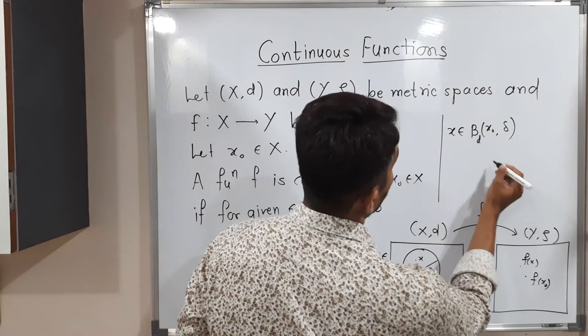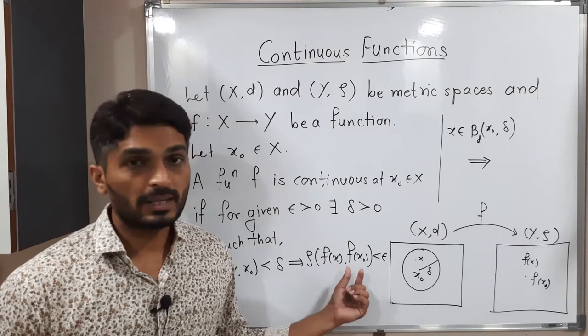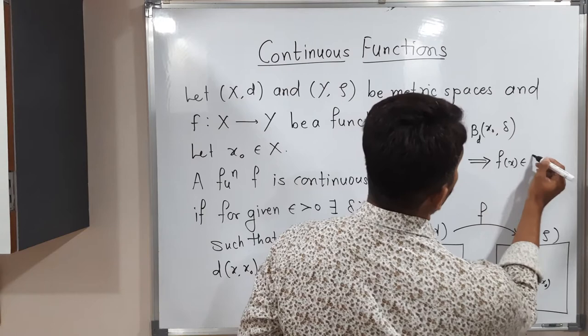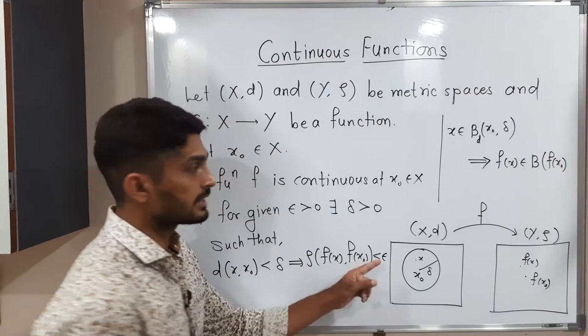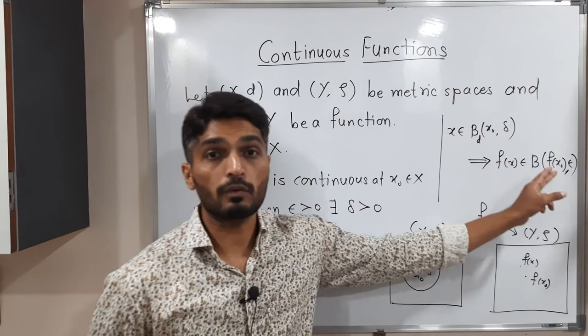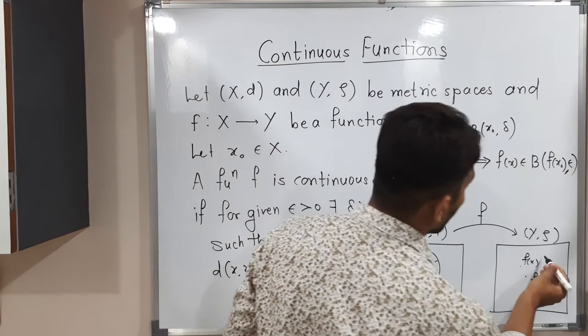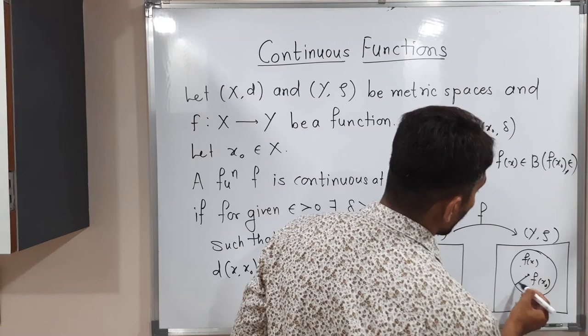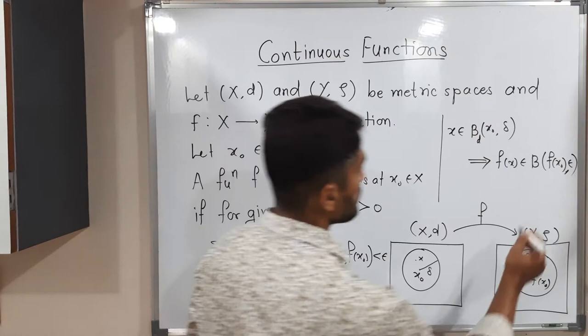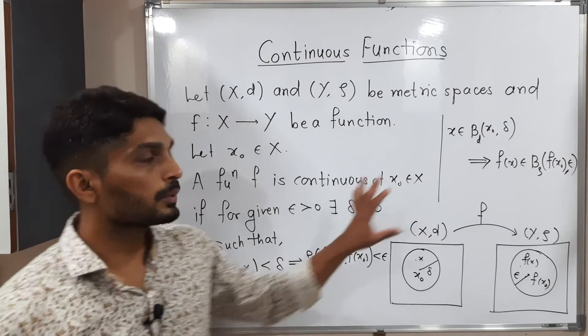This implies F(x) belongs to the open ball with center F(x₀) and radius epsilon, since the distance of F(x) from F(x₀) is less than the radius epsilon, so the point lies inside that ball. Here one ball has radius delta and the other has radius epsilon. The second ball is in metric space (Y, ρ).